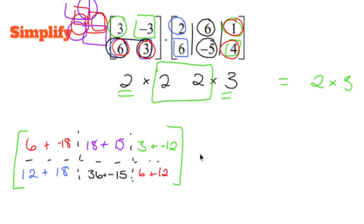And then now it's just an exercise in simplifying. So we end up with our 2 by 3. 6 plus negative 18 is negative 12. 18 plus 15 is 33. 3 plus negative 12 is negative 9.